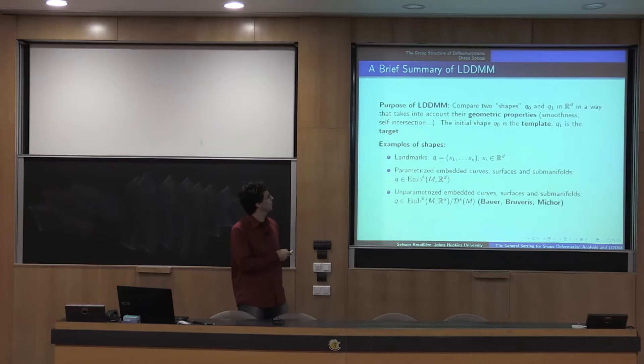So we want to compare two shapes, q0 and q1, in an Euclidean space in a way that takes into account their geometric properties. So for example, the smoothness or the number of self intersections. So the initial shape q0 is called the template, while q1 is the target. And so here are some examples of shapes. You can take landmarks, so just discrete shapes, set of points.